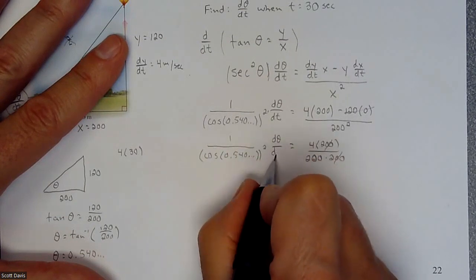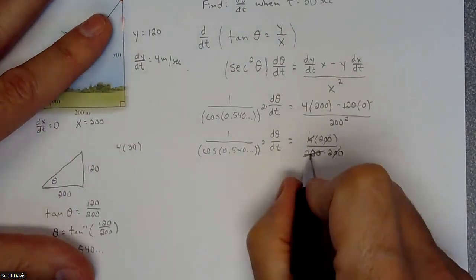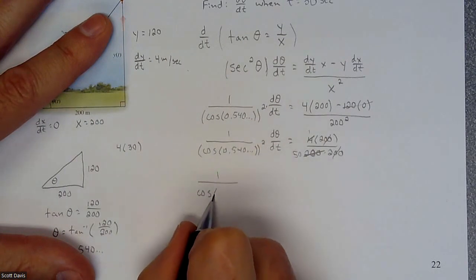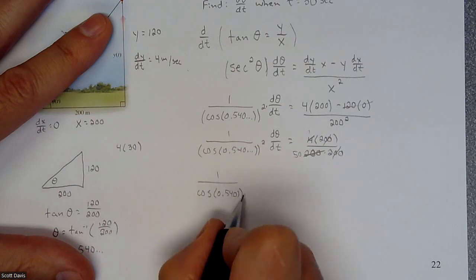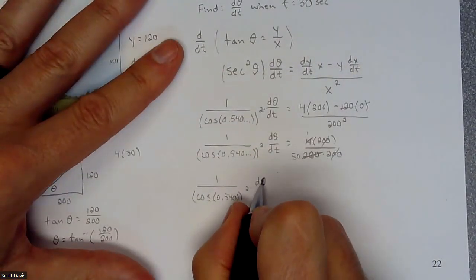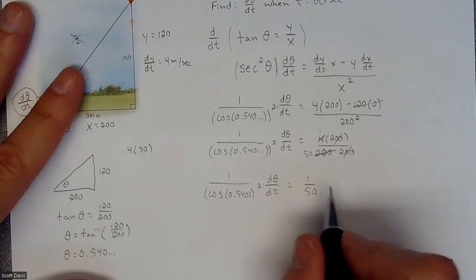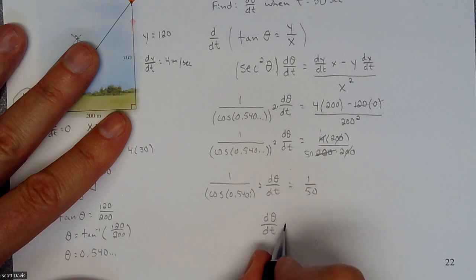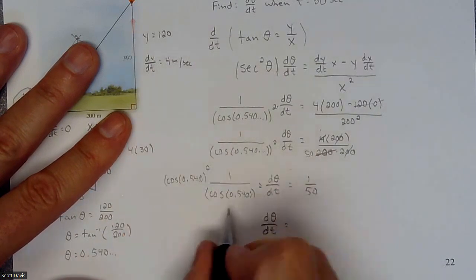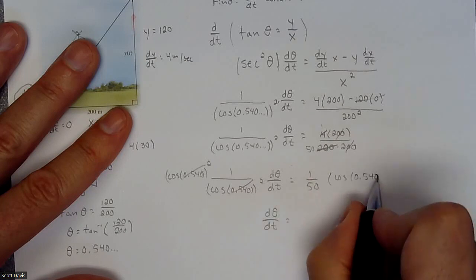So we have: (1 over cosine squared of 0.540) times d theta dt equals 1 over 50. To isolate d theta dt, we multiply both sides by cosine squared of 0.540.